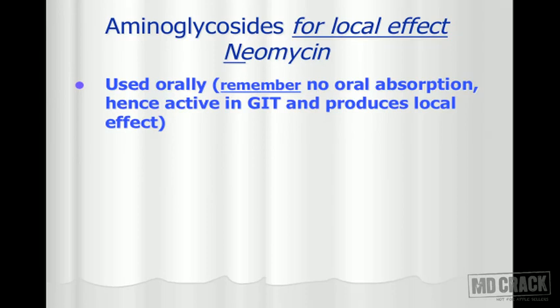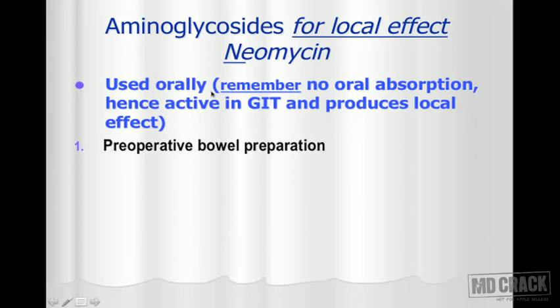Aminoglycosides for local effect — the example is neomycin. This is used orally. Remember: no oral absorption, hence active in the GIT and produces local effect. We use it for pre-operative bowel preparation. The patient is being taken for surgery, and two to three days before surgery you want to eradicate all microorganisms in the gastrointestinal tract to prevent infection. So you put the patient on an antimicrobial agent.